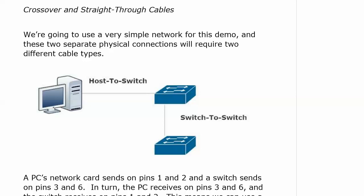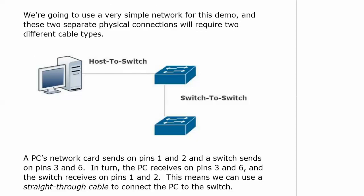We're going to use a very simple network for this demo. We've got a host-to-switch connection and a switch-to-switch connection. Let's concentrate on the first one, the host-to-switch connection. A PC's network card is going to send signals on pins 1 and 2, and the switch sends on pins 3 and 6. In turn, the PC receives on pins 3 and 6, and the switch receives on 1 and 2, so there's no problem there.